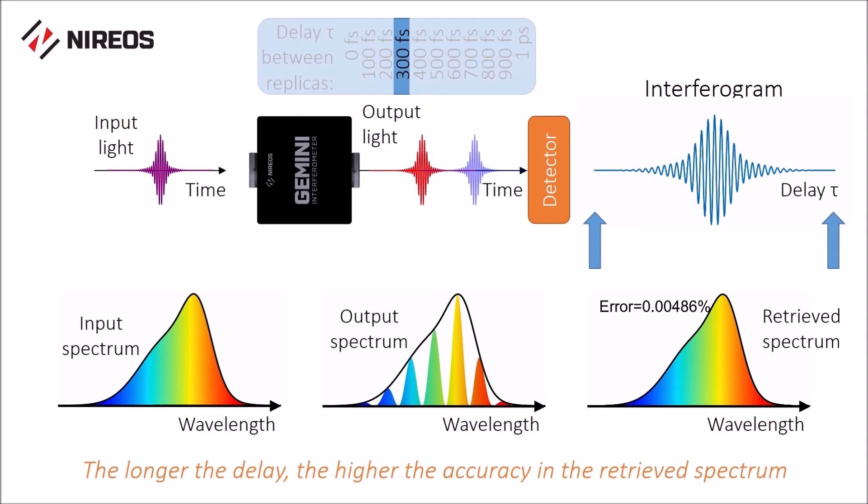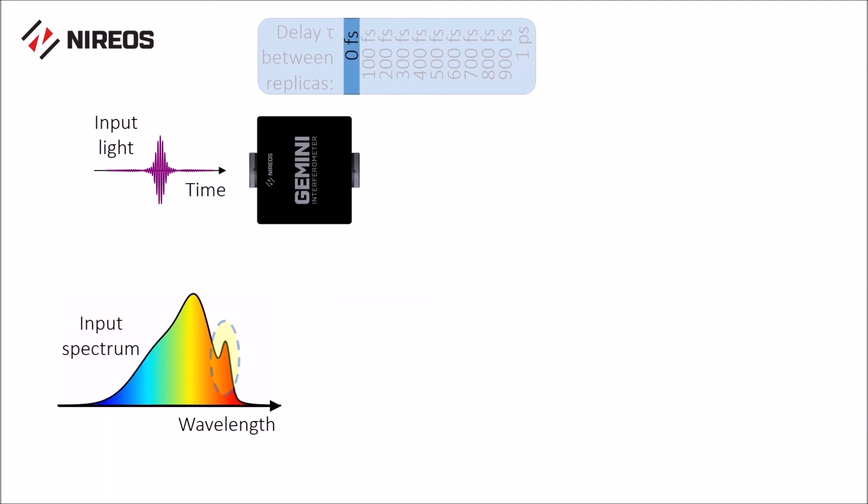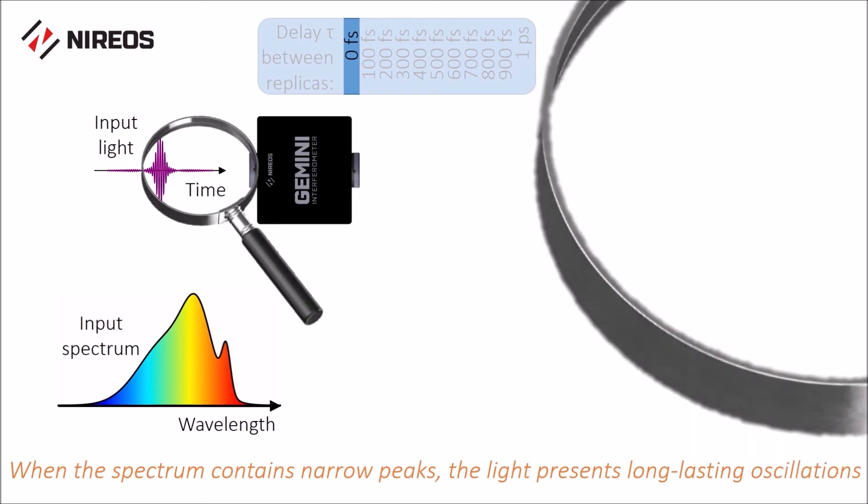When the spectrum of the input light contains narrow peaks, such as this one, the light field presents long-lasting oscillations, as you can see from the zoom in.